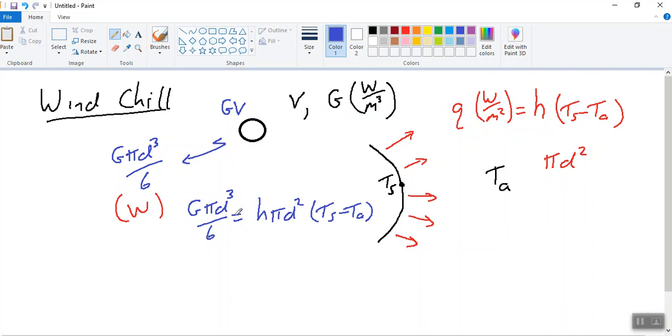And what are we interested in? Well, we're interested in looking at what TS is and how it depends on H essentially. So we do a little bit of algebra here. So we get TS minus TA is equal to, so I'm going to get the pi's are cancelled, we're going to get gd over 6h.